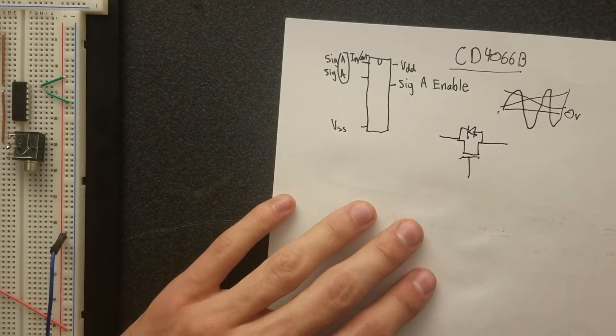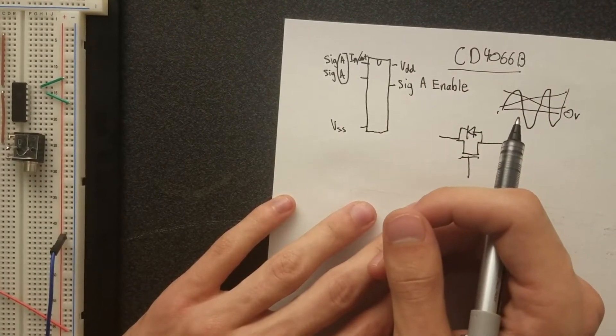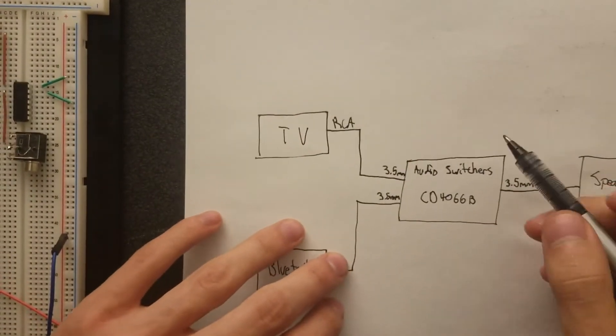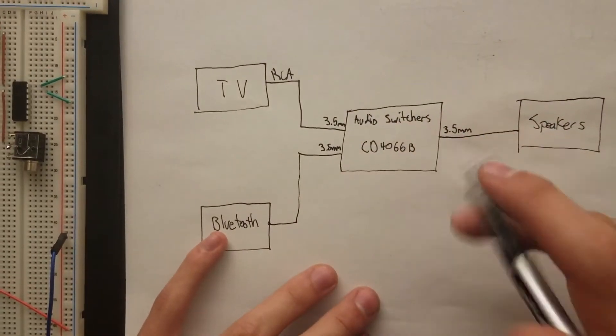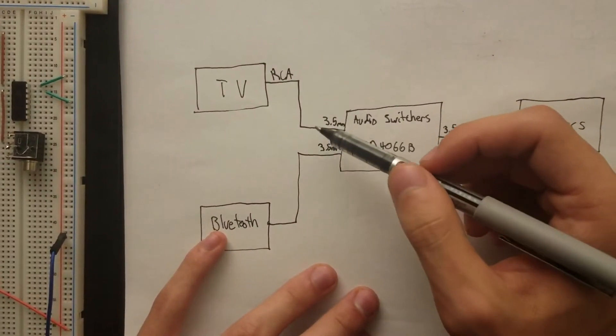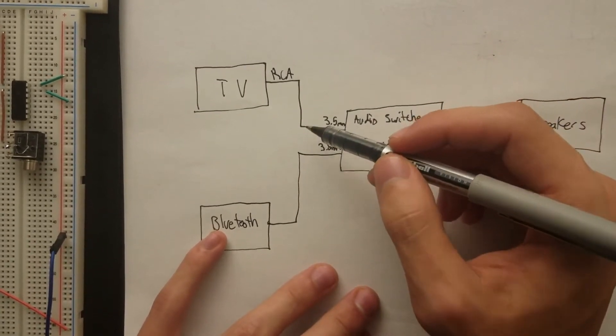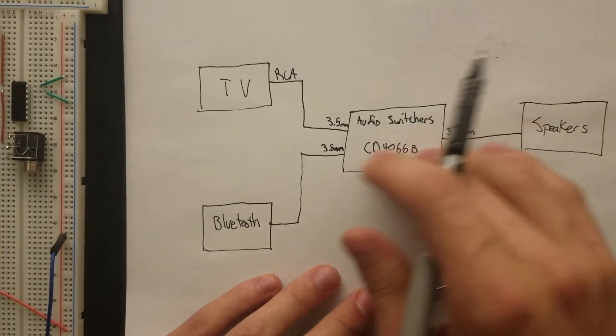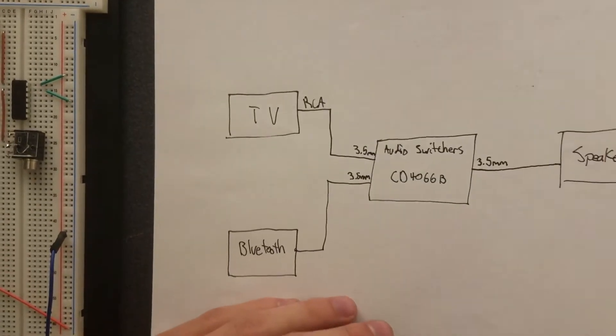We only need two, because we need left and right audio. Well, actually, no, let's go back to this. We don't really need to think about the whole schematic right now, but we actually need four channels. So, we do need to use all four, because we need two for the TV input, and two for the Bluetooth input. And then those will connect together on the output, and go to the speakers. And then we'll only, we'll make sure that only one of those is on at any given moment.